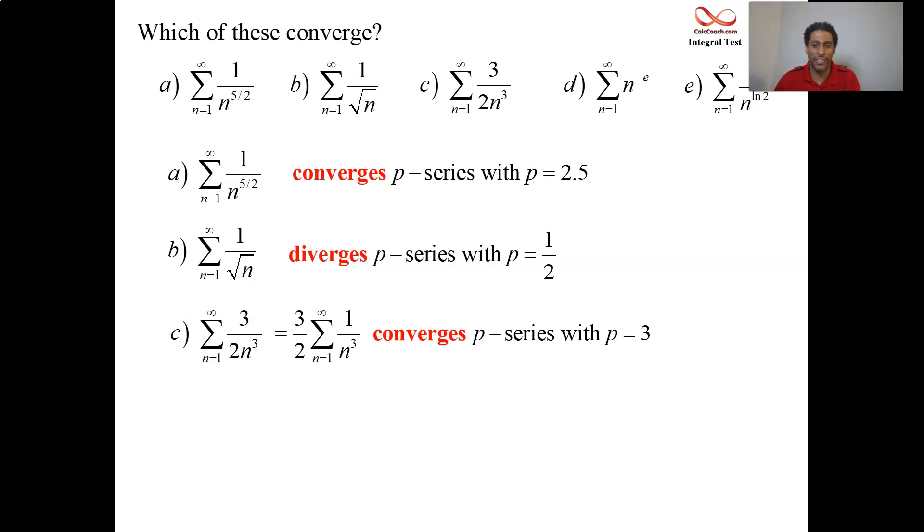Gets a little tricky at the end here. n raised to the negative e is really one over n to the e. e is a number like pi. We remember the first few digits of pi to be 3.14. We remember the first few digits of e to be 2.71. It's a p-series with p equals e. e is 2.71, greater than 1, so it converges.